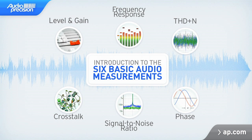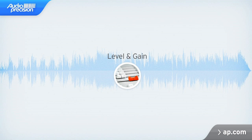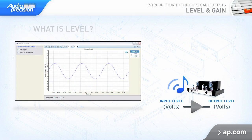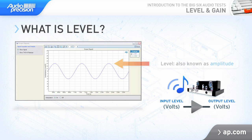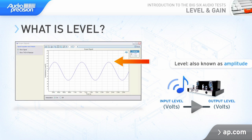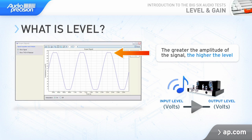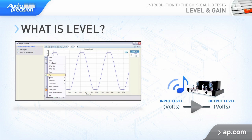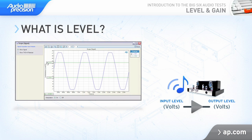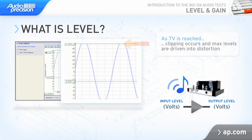This video looks at level and gain. Level, also known as amplitude, describes how big the signal is. The greater the amplitude of the signal, the higher the level. Level is probably the most basic audio measurement we can make — how much energy does our device output? What level can it output before it distorts a signal? In this example, as we increase the level from 3 volts up to 7 volts, the device is exceeding its capabilities and distorts the signal.